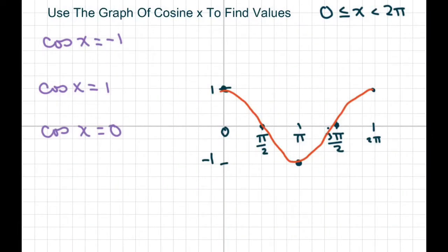Hi everyone, we're going to use the graph of cosine x to find values. The graph is restricted from 0 to 2π, so we include 0 but not 2π because there's no equal sign. This is a good way to know your values, especially for quadrantal angles.